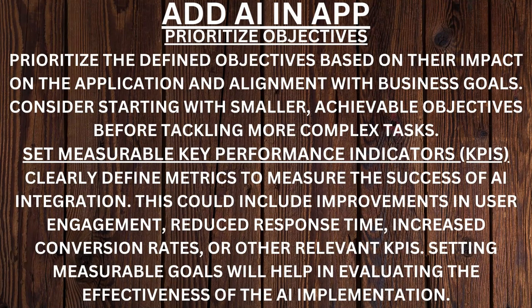Prioritize objectives. Prioritize the defined objectives based on their impact on the application and alignment with business goals. Consider starting with smaller, achievable objectives before tackling more complex tasks. Set measurable key performance indicators (KPIs). Clearly define metrics to measure the success of AI integration. This could include improvements in user engagement, reduced response time,